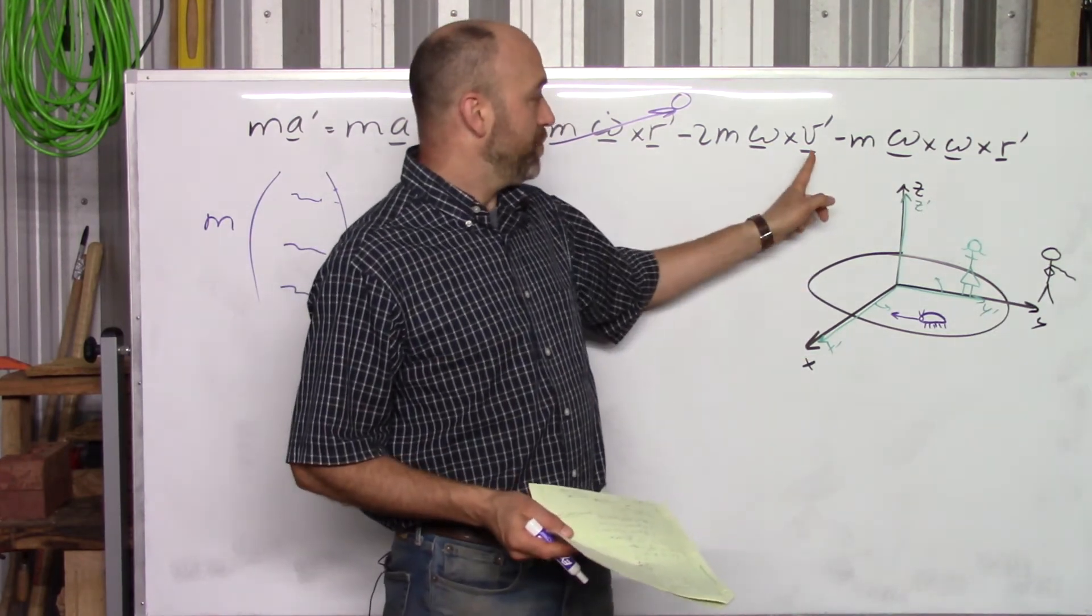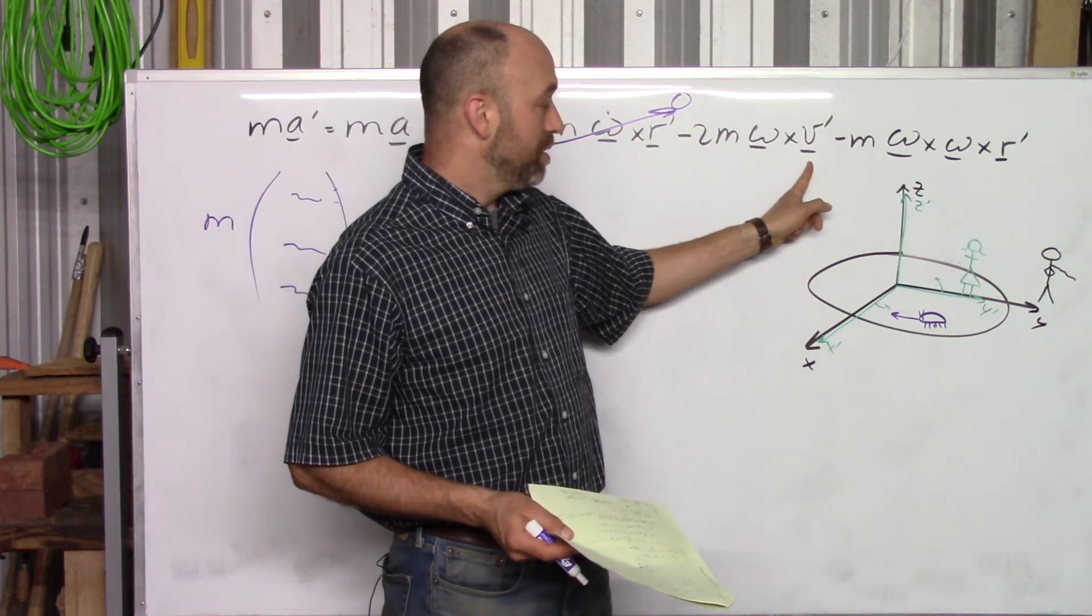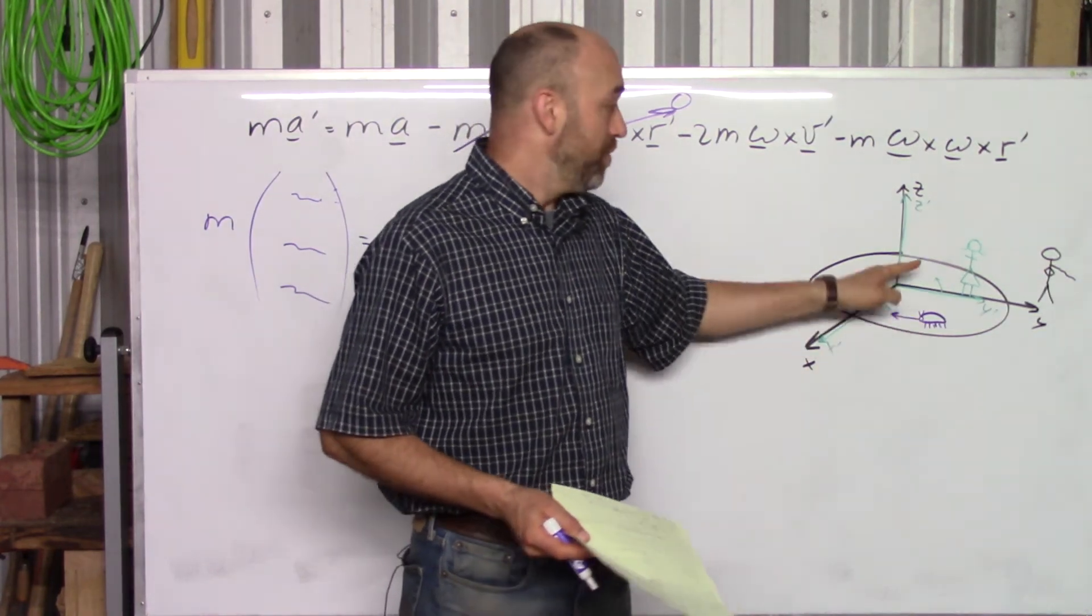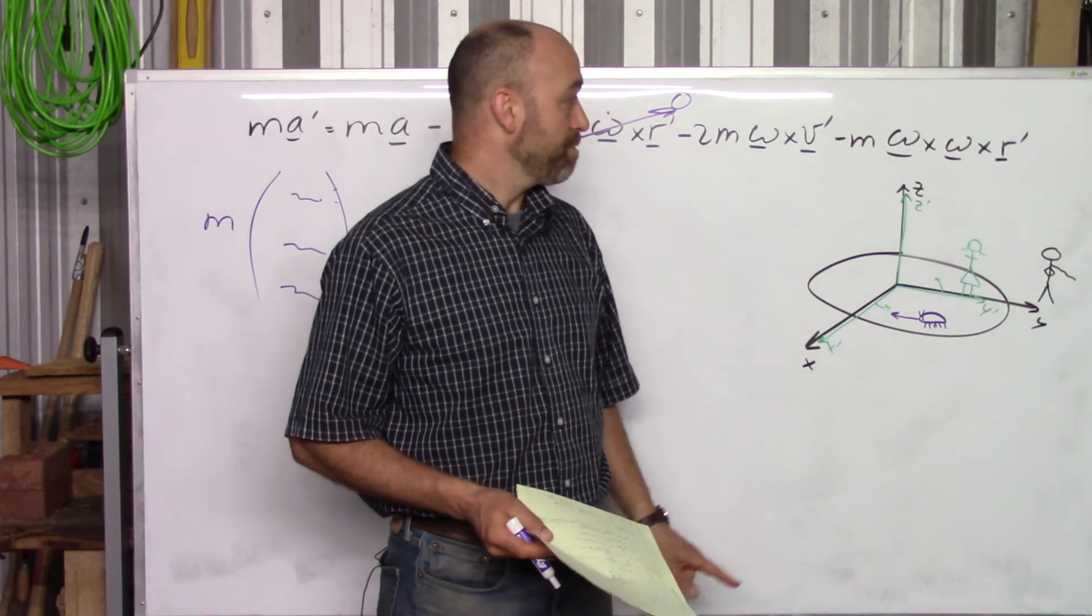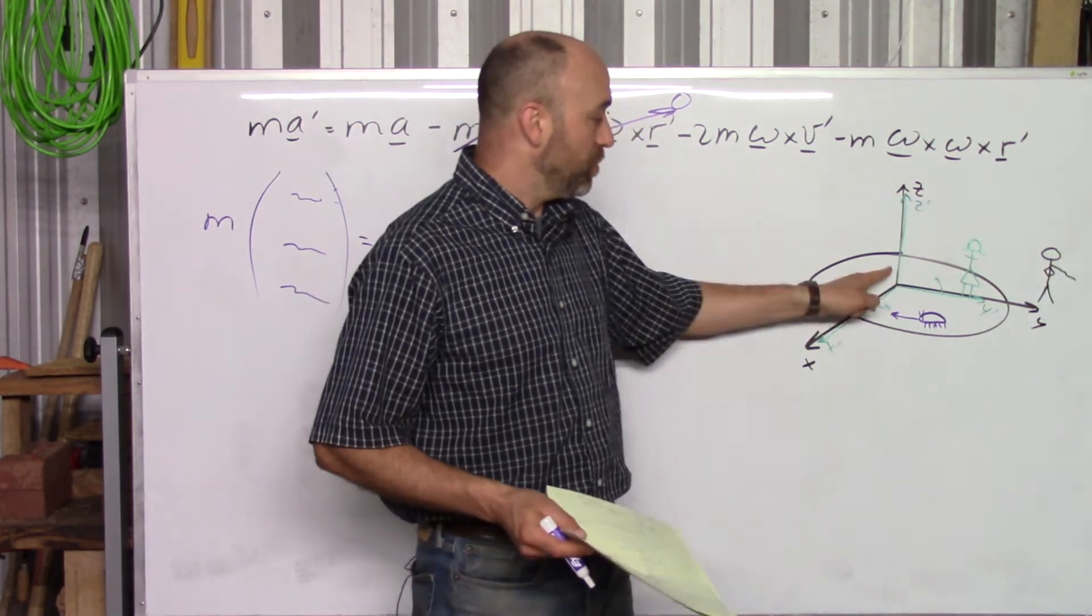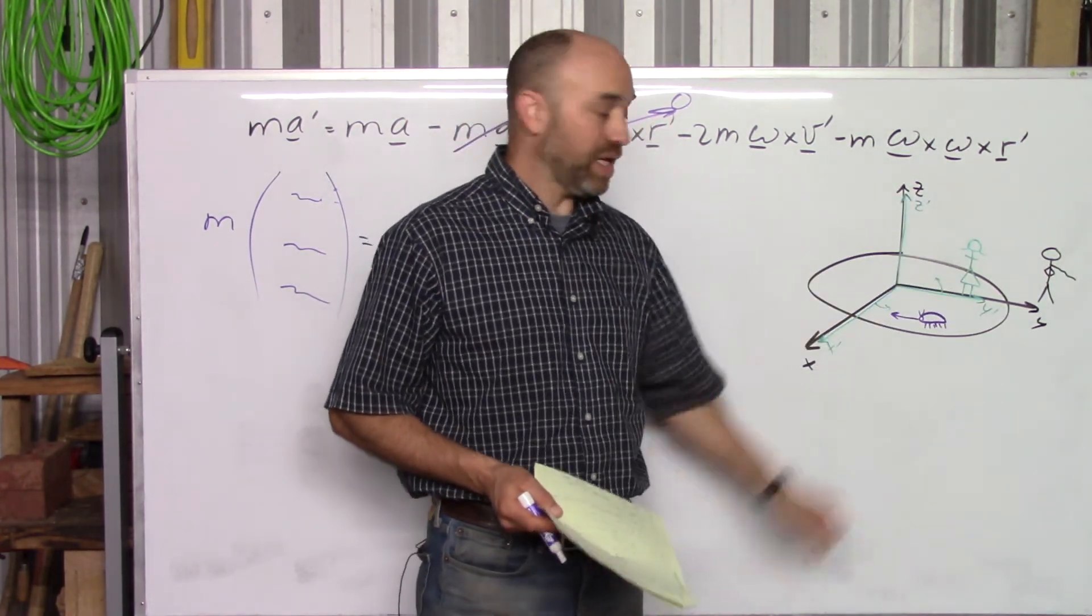And then you've got V prime. What's that? That's the speed of the ladybug from Sally Sue's perspective. What's R prime? That's the location of the ladybug from Sally Sue's perspective.